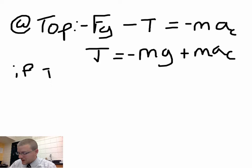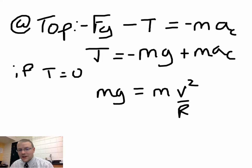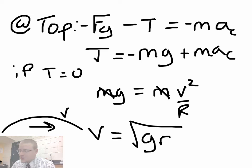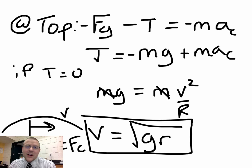The minimum speed to go around the top occurs when tension equals zero — meaning gravity alone provides the centripetal force: mg = mv²/r. Mass cancels, giving v_min = √(gr). That's the minimum speed to go around the top of the circle without any tension, just letting gravity carry you through. Roller coaster designers do not use this minimum speed because any air friction or track friction would require going a bit faster.